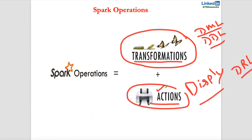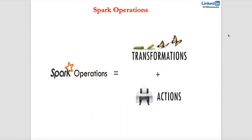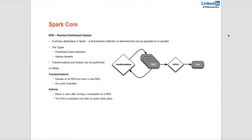Transformations are lazy. Whenever you apply transformations, a job will only be triggered when you trigger an action. You can apply any number of transformations; every transformation returns a new RDD because RDDs are immutable. RDD stands for Resilient Distributed Dataset — resilient means self-recovery: if any issues occur internally, it can fix them internally.